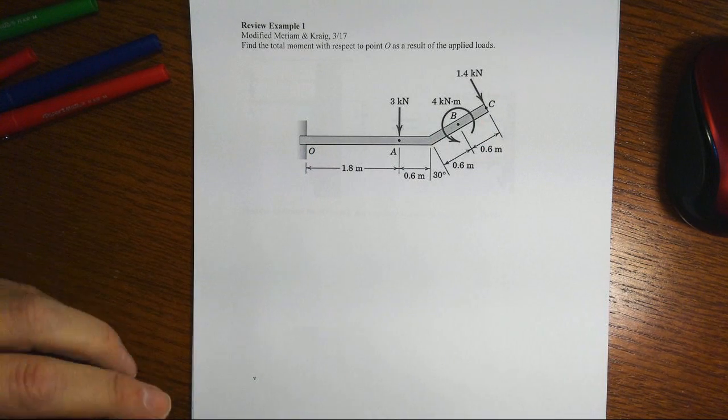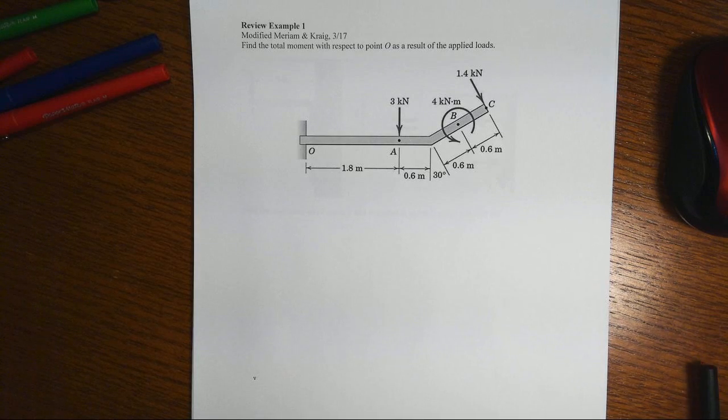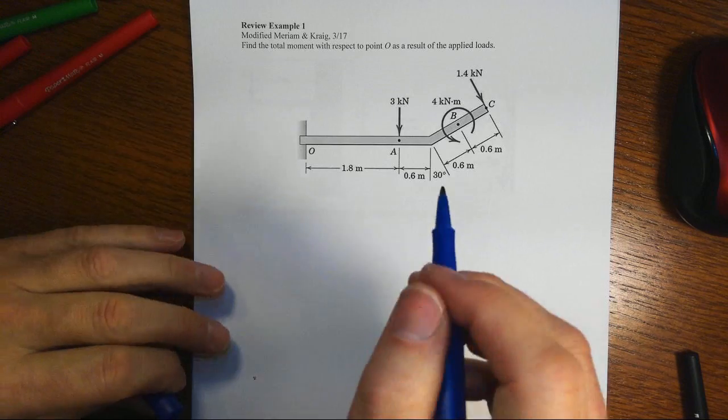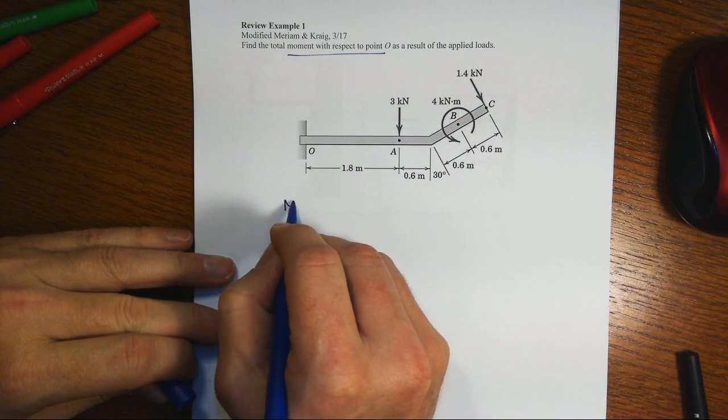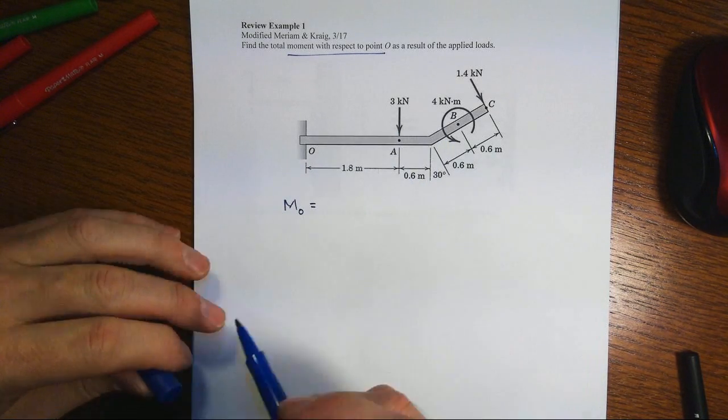There's more than one way to do this, and we'll illustrate one and maybe briefly talk about the others. So if we want the total moment with respect to O, what we're going to do is sum up the effects from each one of these.